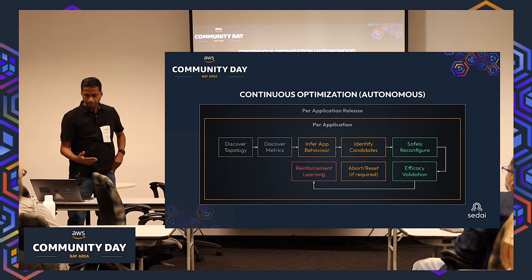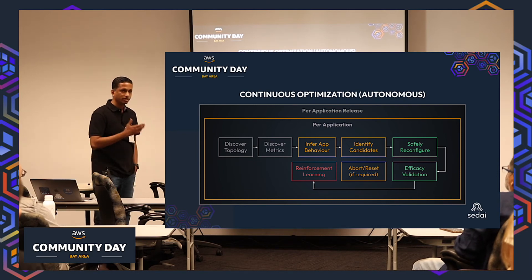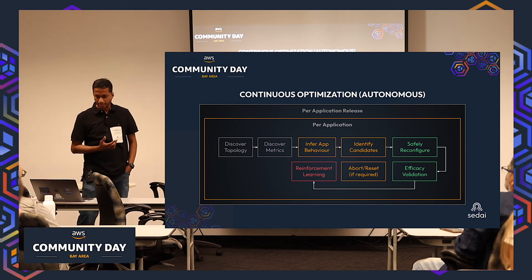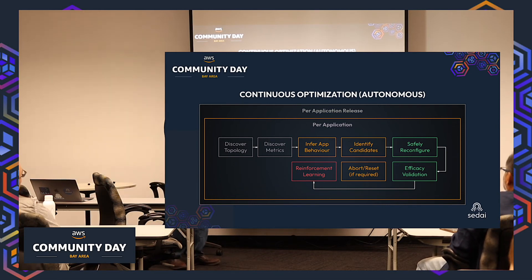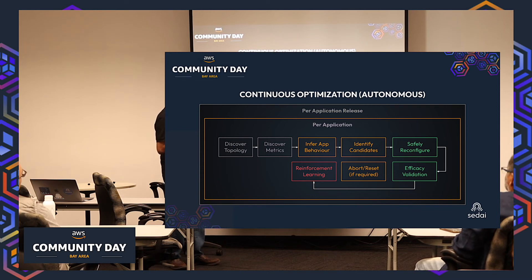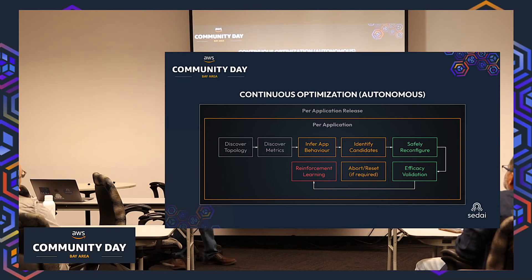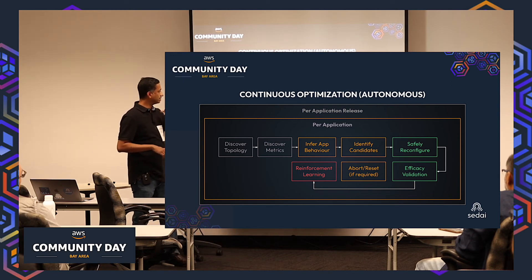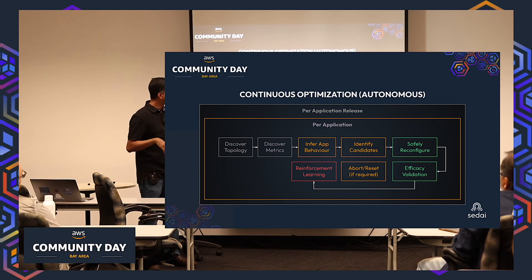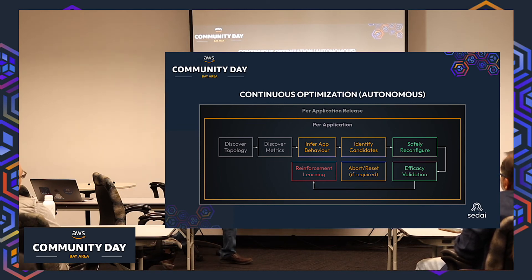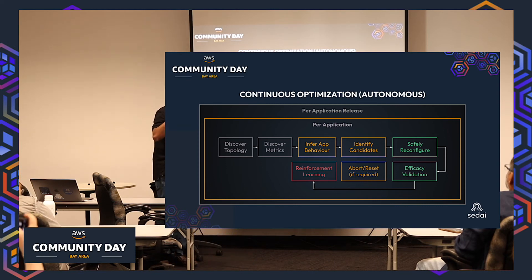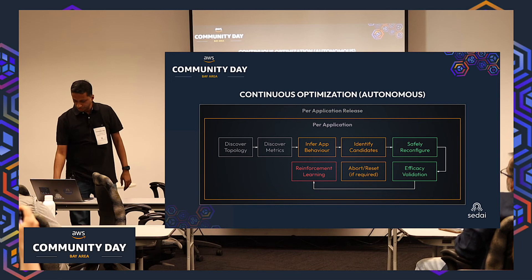To wrap up, when you have many microservices changing all the time, follow this process: identify all microservices in your topology, identify the right metrics from CloudWatch, Datadog, or InfluxDB, identify application behavior — real-time, batch, or messaging — identify seasonality, identify optimization candidates, make changes, learn from those changes, and loop through it continuously. That's how autonomous optimization systems work.